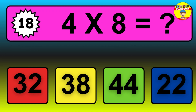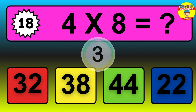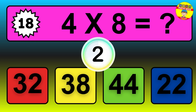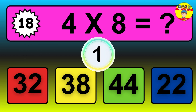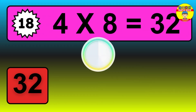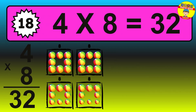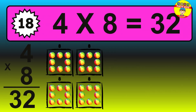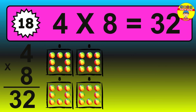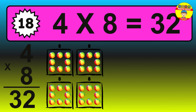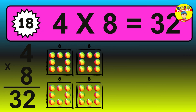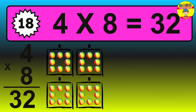Question 18. 4 times 8 equals what? 4 times 8 is 32. To calculate, we have 4 groups with 8 balls each one. So, how many balls do we have? 32 balls.